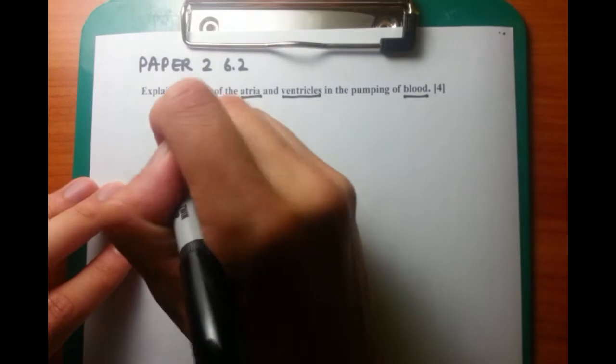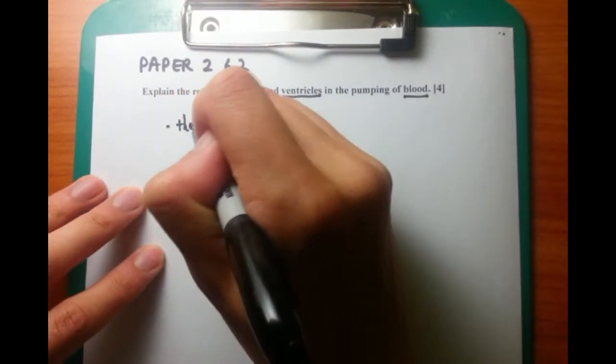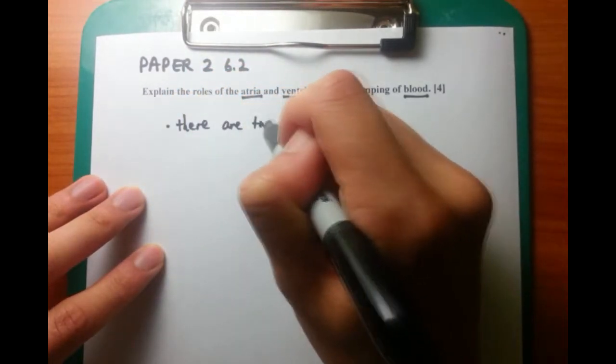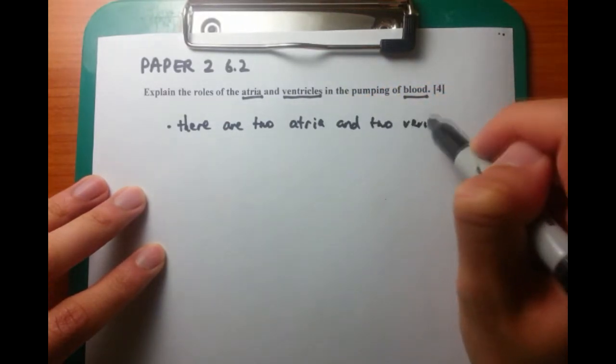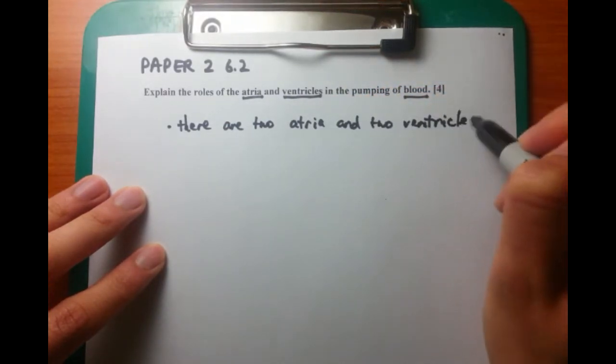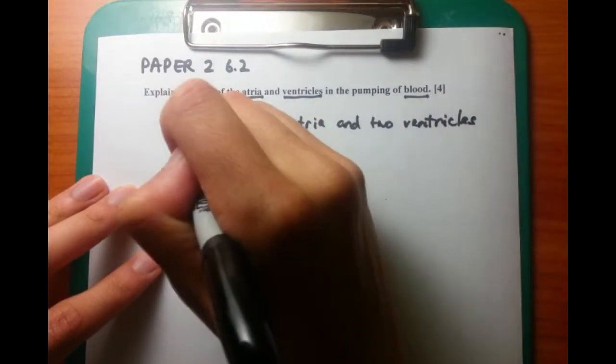So obviously this is talking about the heart. And we want to talk about, first of all, what components there are of the heart. So first of all, there are two atria and two ventricles: right atria, right ventricle, left atria, left ventricle.